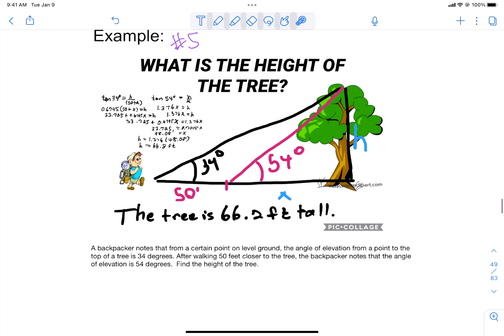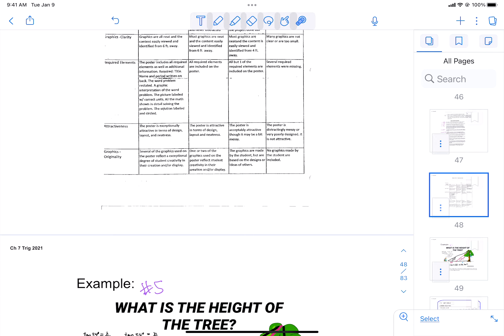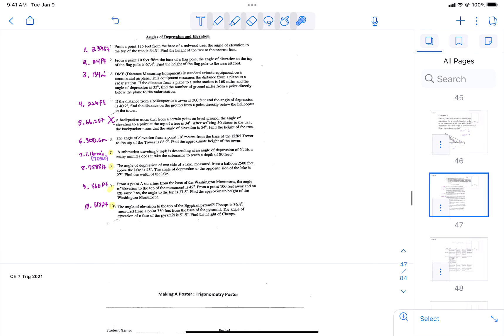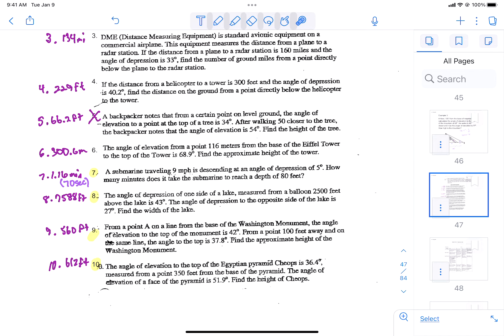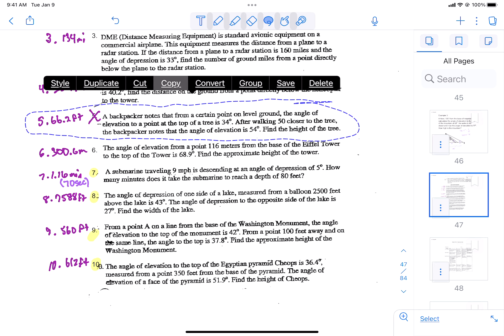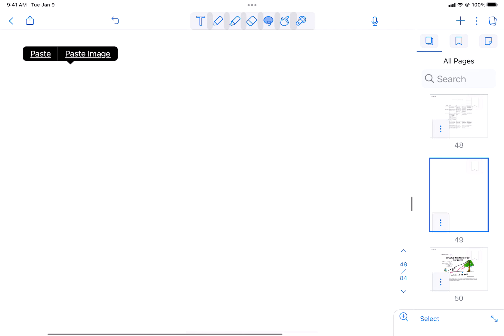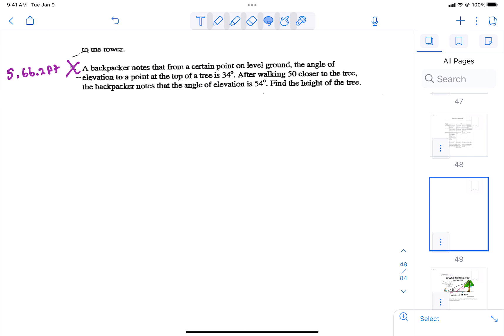So we're going to do example five right now. So if you could, wherever you plan to do these problems, if you could do number five with me. Let me kind of cut and paste this problem right now. We're going to do number five. And then you'll have the rest of the class to work on. So it says, a backpacker notes that from a certain point on level ground, the angle of elevation to the top of the tree is 34 degrees. So here's the top of the tree. Here's our backpacker. He looks up to the top of the tree and it's 34 degrees.